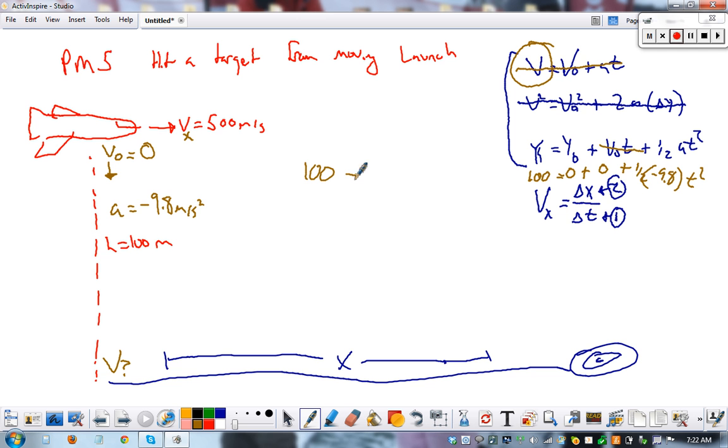So 100 equals negative 9.8 and a half is negative 4.9 times t squared. This is technically negative 100 because it's downward distance. It's losing height. Divide both sides by negative 4.9 and we get...